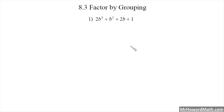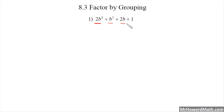In this video, we will be factoring by grouping. You know you need to factor by grouping when you see four terms. In this problem here, we have four terms: one, two, three, four. When you have four terms, factoring by grouping will be the appropriate method.